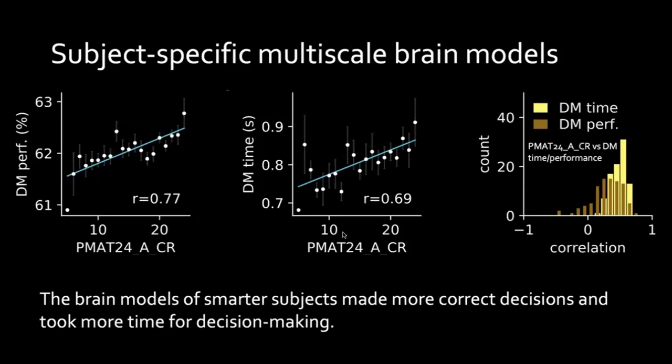By coupling the large-scale brain models with this decision-making circuit, we can simulate a subject-specific multiscale brain model for each of 650 subjects. Indeed, the brain models of the smarter subjects made more correct decisions and took more time for decision-making, explaining the intelligence behavior of our real humans.